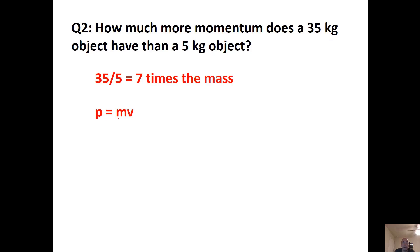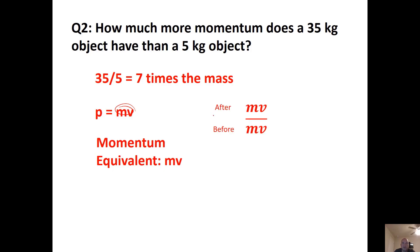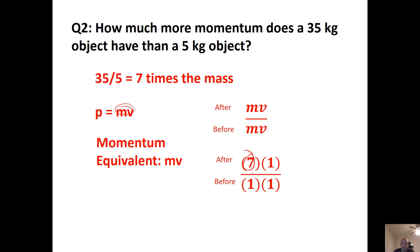The question asks how much the momentum changes. The equivalent of momentum is mass times velocity, so we set up an after-over-before ratio. Anything that doesn't change gets a one. The only thing that changed is the mass, which is 7 times the original. So the momentum would be 7 times whatever it was before.